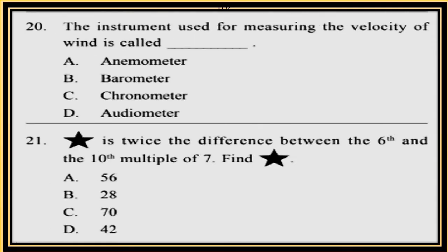Question 20. The instrument used for measuring the velocity of wind is called: A. Anemometer, B. Barometer, C. Chronometer, D. Odometer.